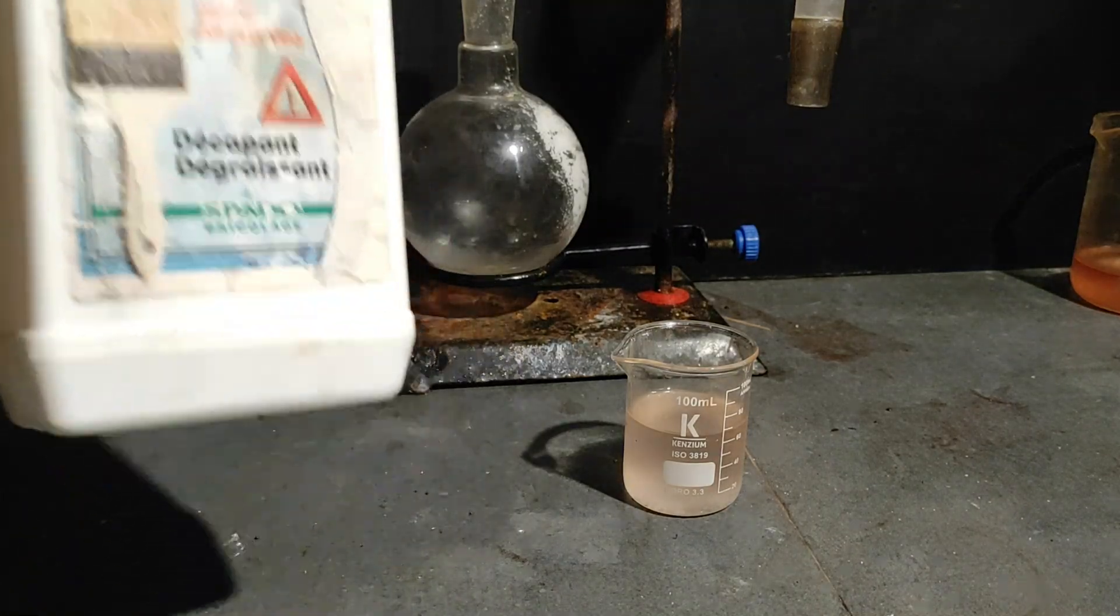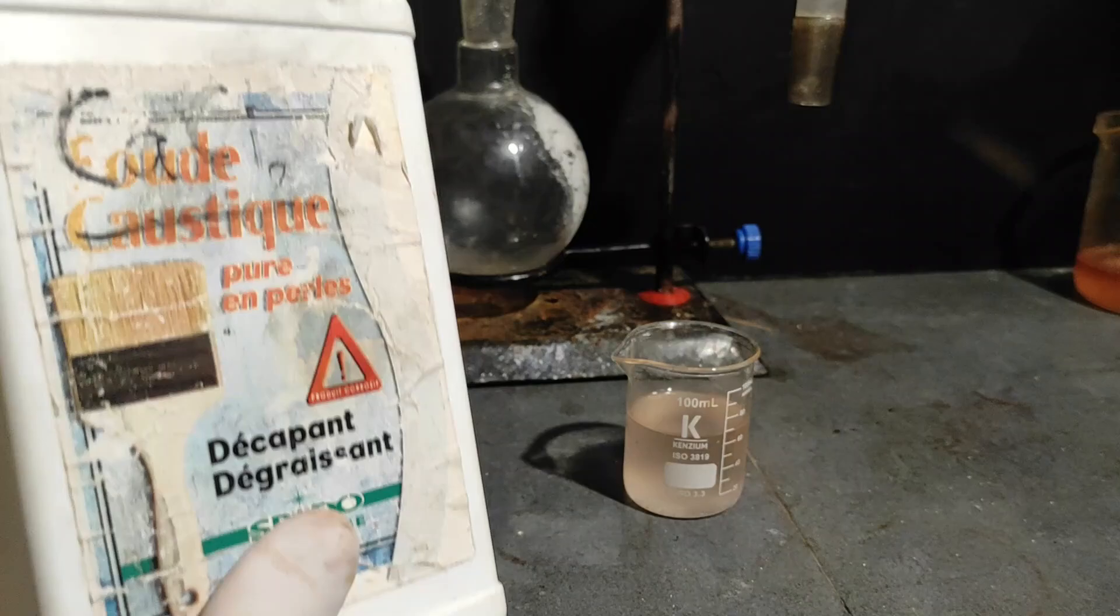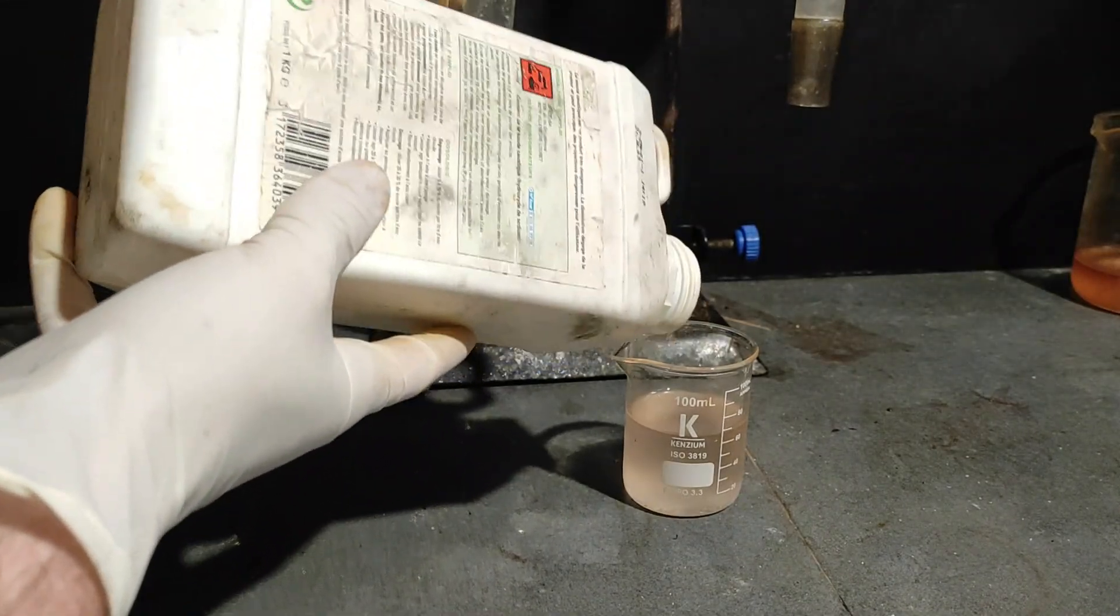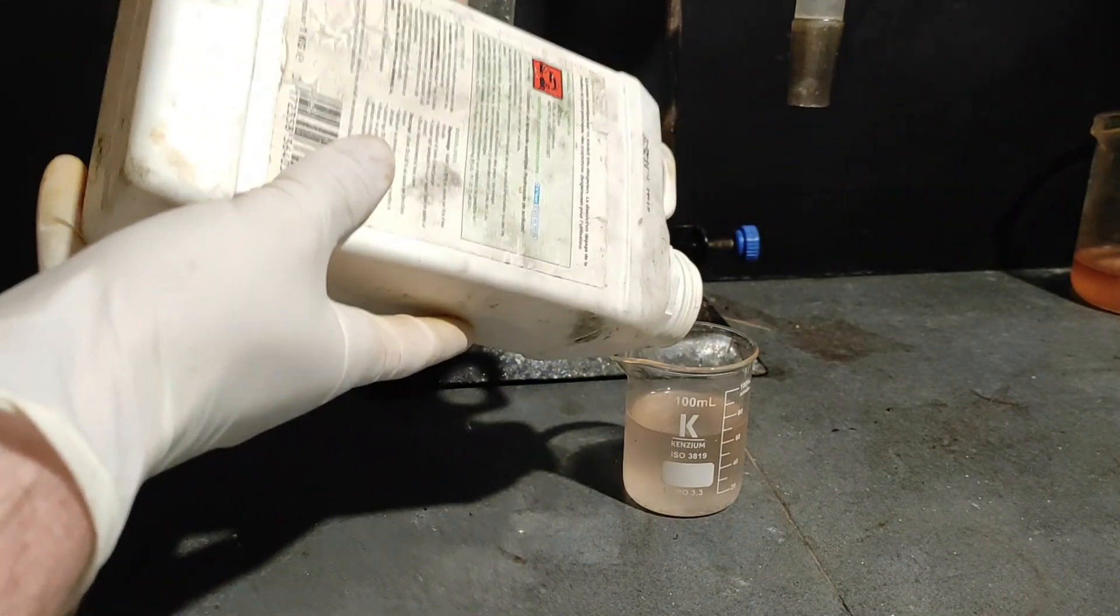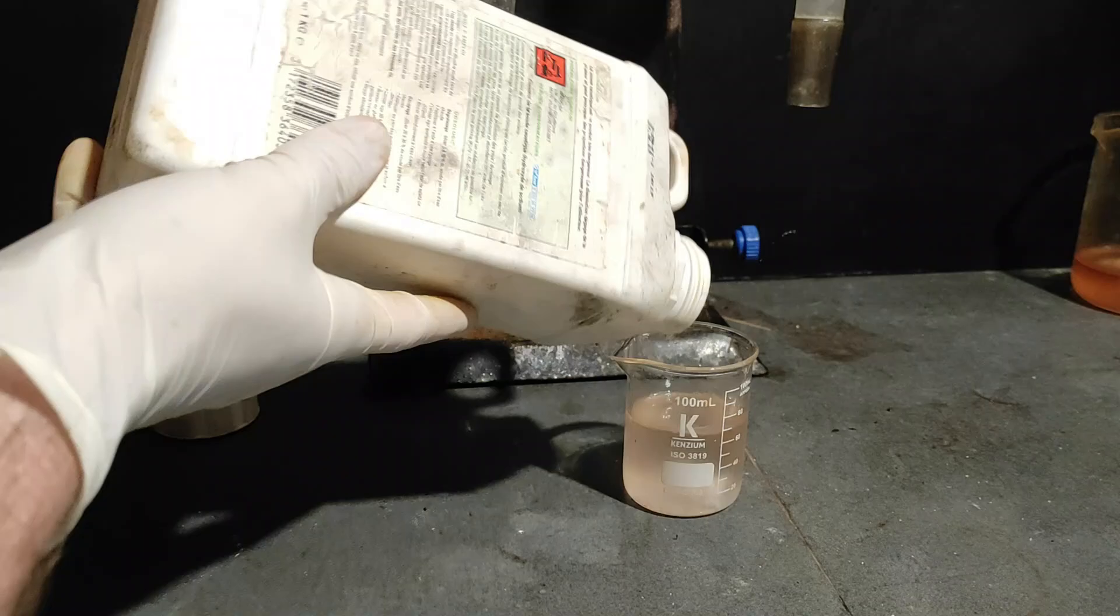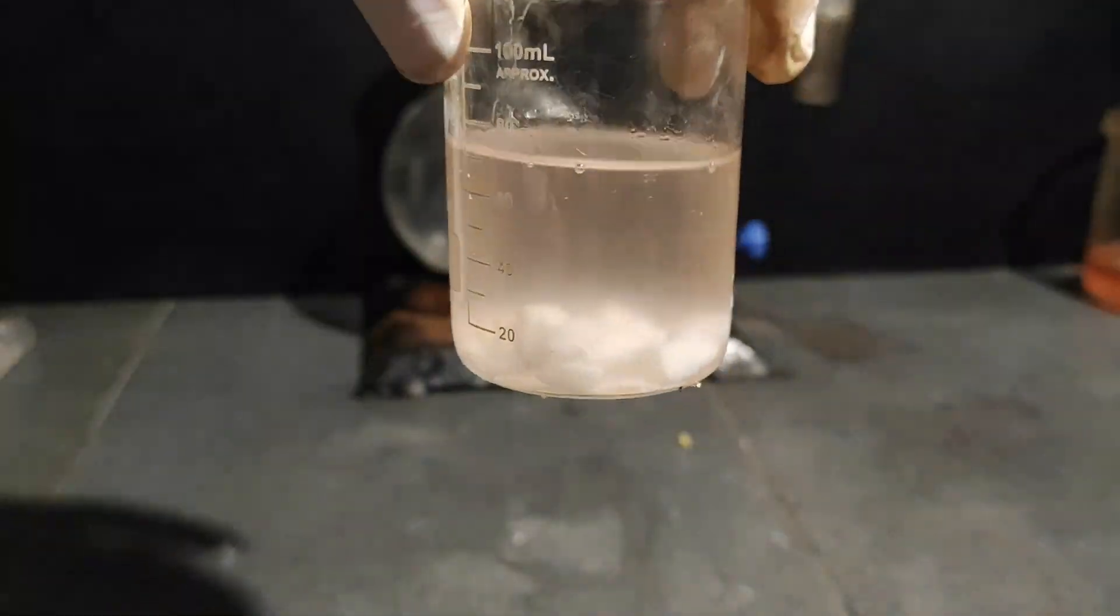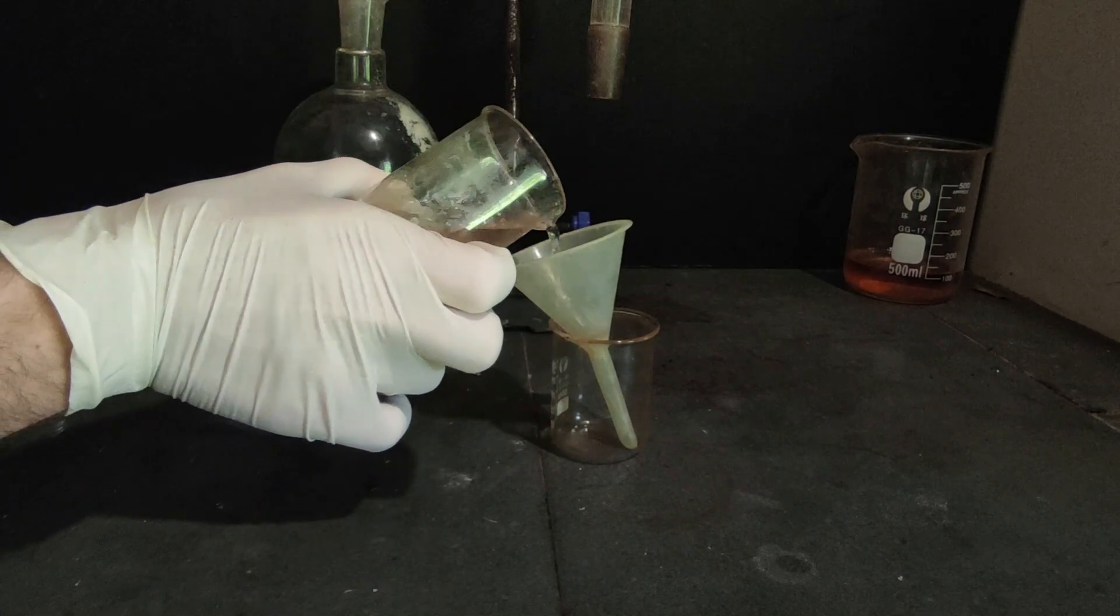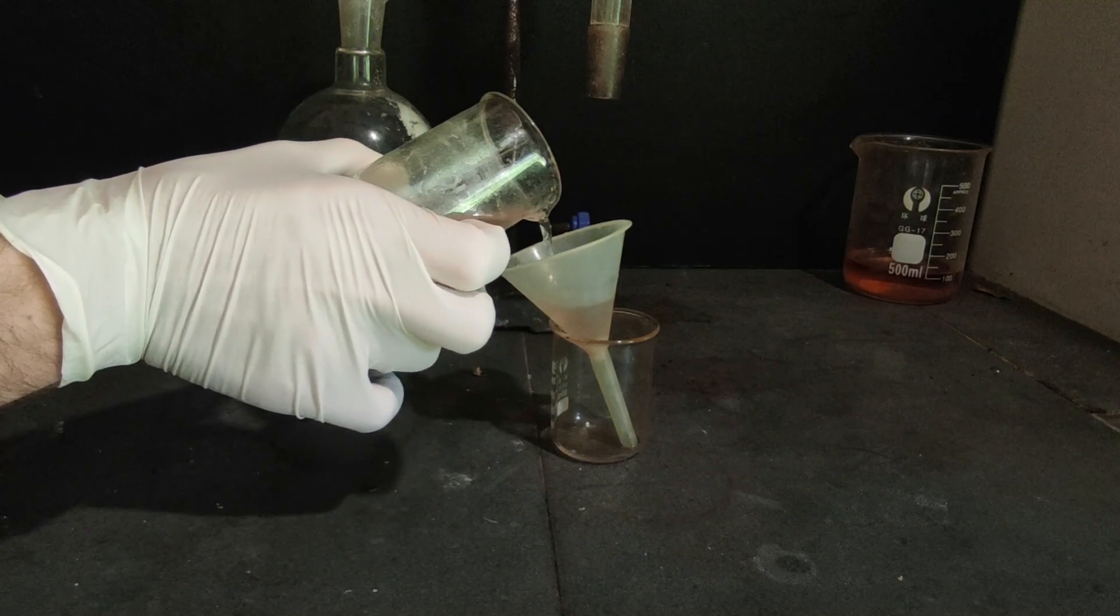Now to get rid of any water at all that might be present in our DCM we're gonna add a random amount of anhydrous calcium chloride which will hold onto any water molecules present. I let it sit for a few hours and the solution looked much clearer after a quick filtration.